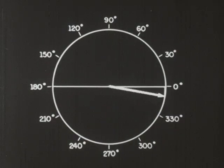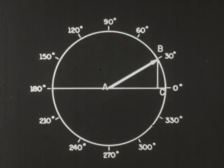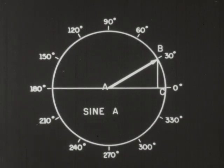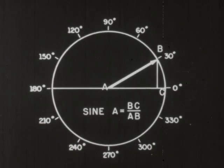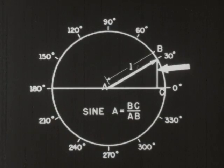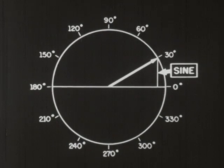The length of a line depends upon the size of the angle — we can say that its length is a function of the angle. If we call the angle at the center of the circle A, then the sine of angle A is equal to BC divided by AB. We will call the length of the vector AB 1. Then we can say that this line BC is the sine of the angle.